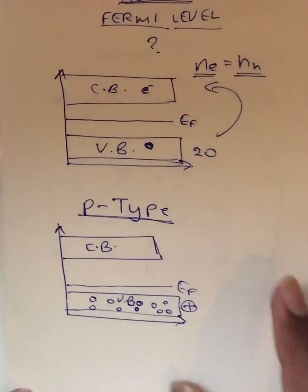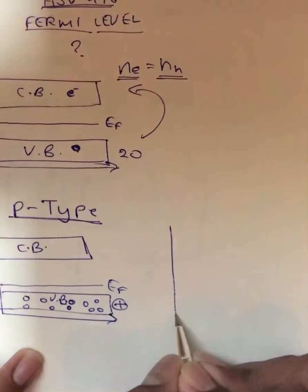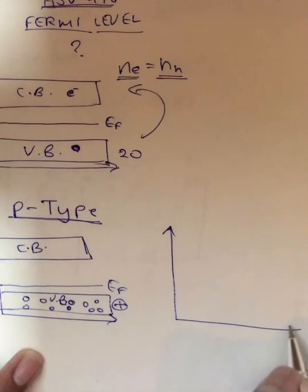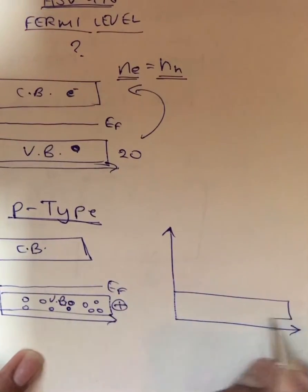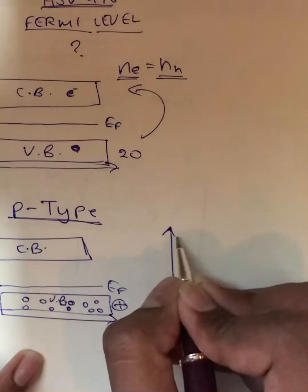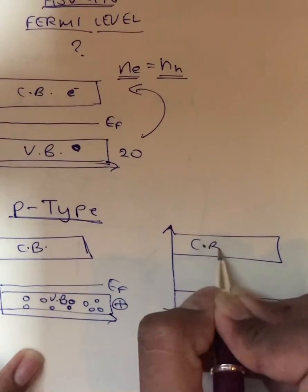Now let us consider an n-type semiconductor. Now we all can predict what the answer is. See, this is the valence band. This is the conduction band.